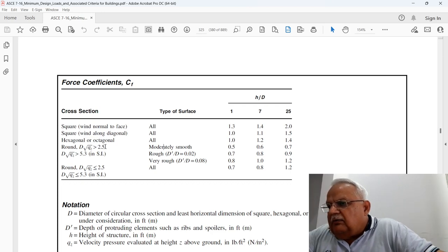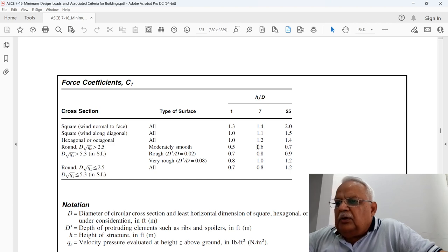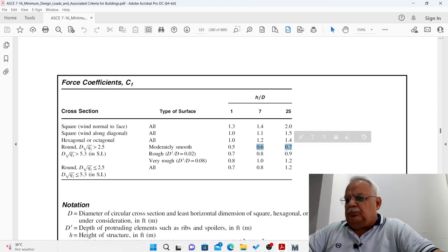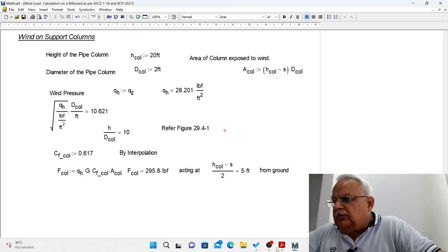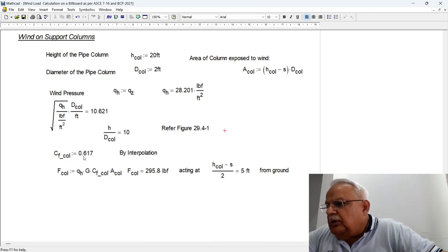The value of D times under root qh should be more than 2.5. Our value is more than that, and H upon D in our case is 10. We have the value for 7, which is 0.6, and value for 25 is 0.7. So we have to interpolate between these two values, 0.6 and 0.7. So the same interpolation I have done and the value comes out to be 0.617.